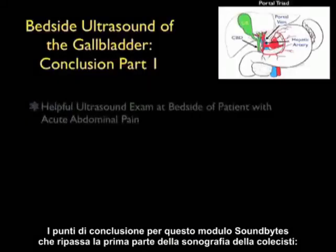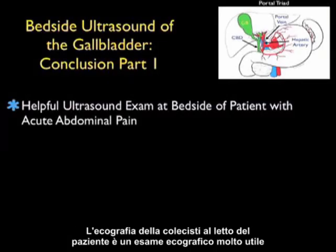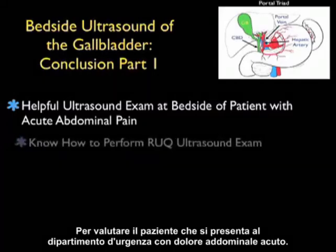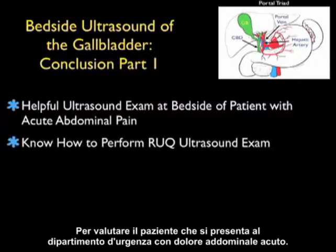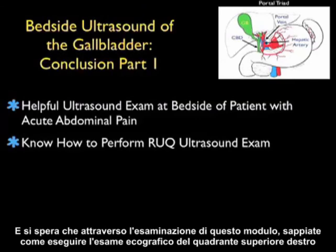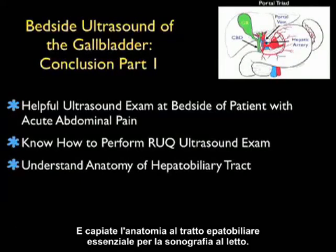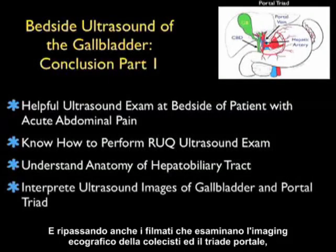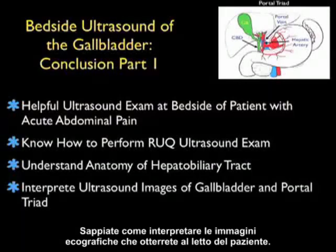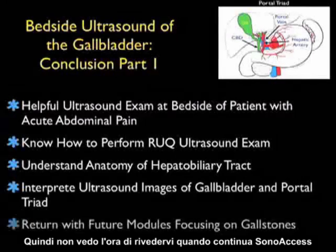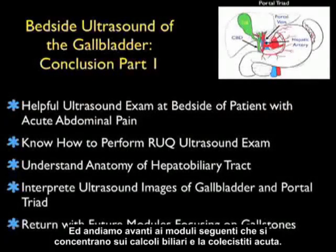My conclusion points for this SoundBytes module covering part one of gallbladder sonography: gallbladder ultrasound at the patient's bedside is a very helpful exam for evaluating patients presenting to the emergency department with acute abdominal pain. Hopefully through this module you now know how to perform the right upper quadrant ultrasound examination and understand the anatomy of the hepatobiliary tract essential to bedside sonography. By reviewing the ultrasound imaging of the gallbladder and portal triad, you now know how to interpret the images obtained at the bedside. I look forward to seeing you in future modules focusing on gallstones and acute cholecystitis.